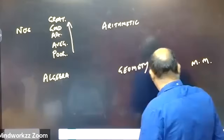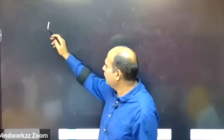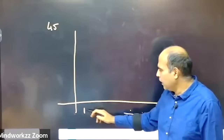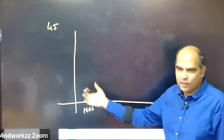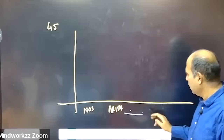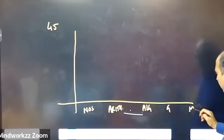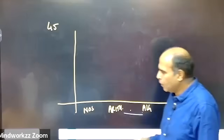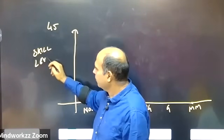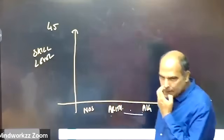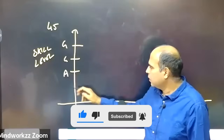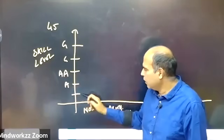If you want to score 45 marks in the CAT, you can put it on a chart, area-wise. Each of these areas — numbers, arithmetic, algebra, geometry, and modern maths — are chapters. On this axis, I put skill level: poor, average, above average, good, and great.